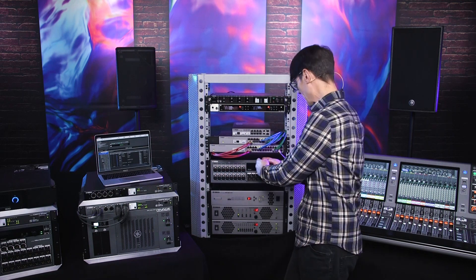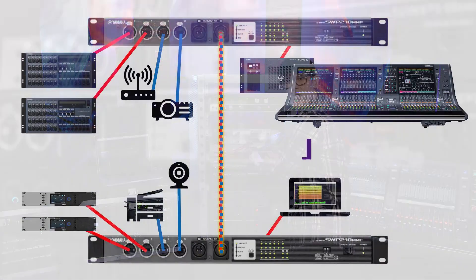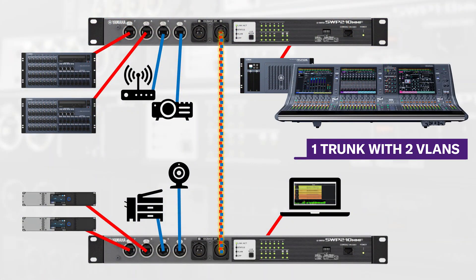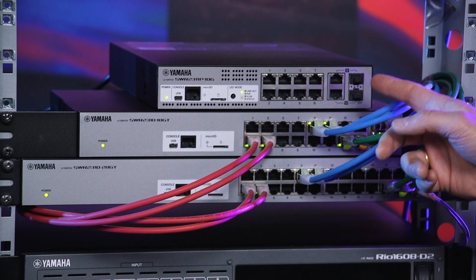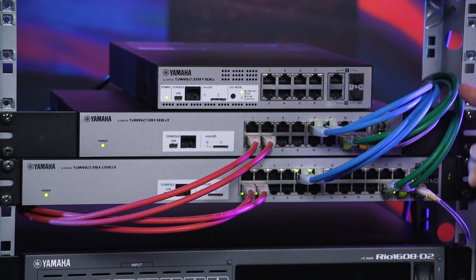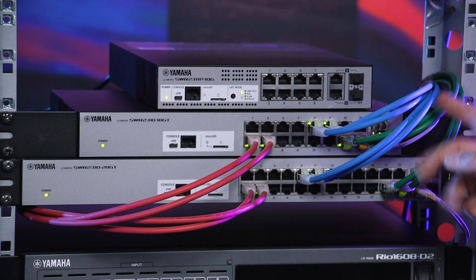The trunk will carry the data of several VLANs from one switch to another without mixing it up. Data from VLAN 1 ports in the first switch will only reach VLAN 1 ports in the second switch. Same for the other VLAN data — they will only reach the ports associated with the same VLAN.